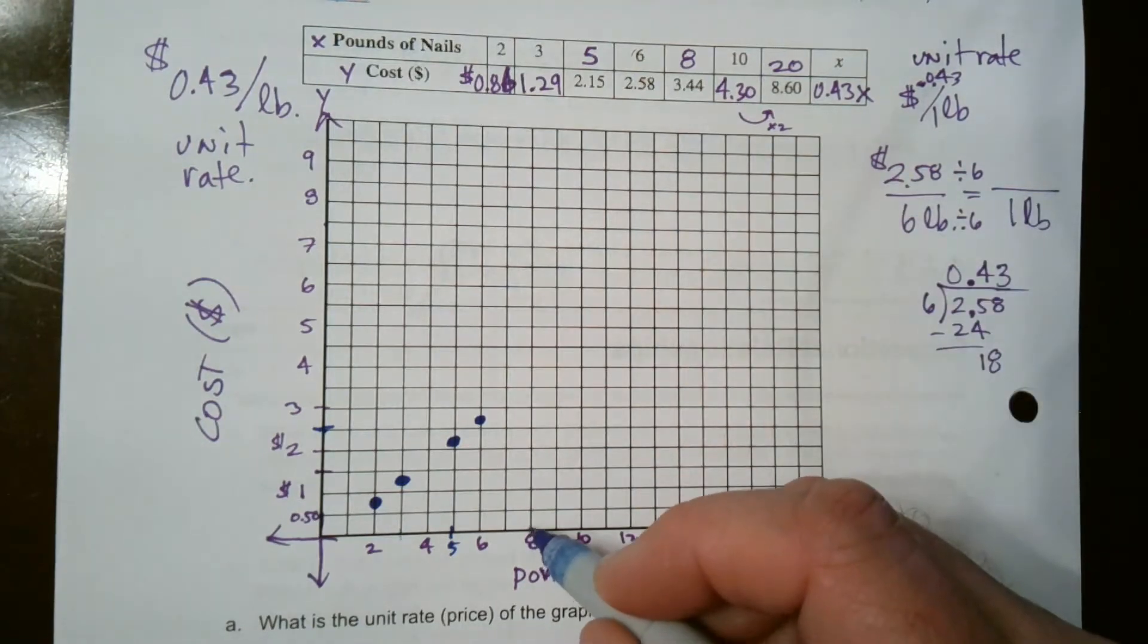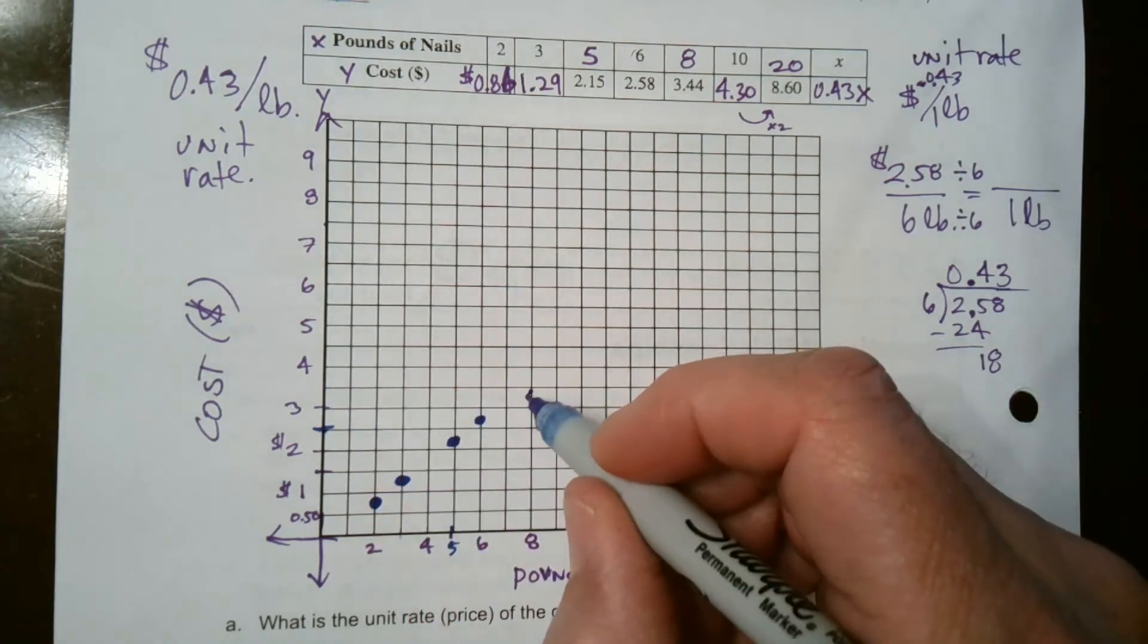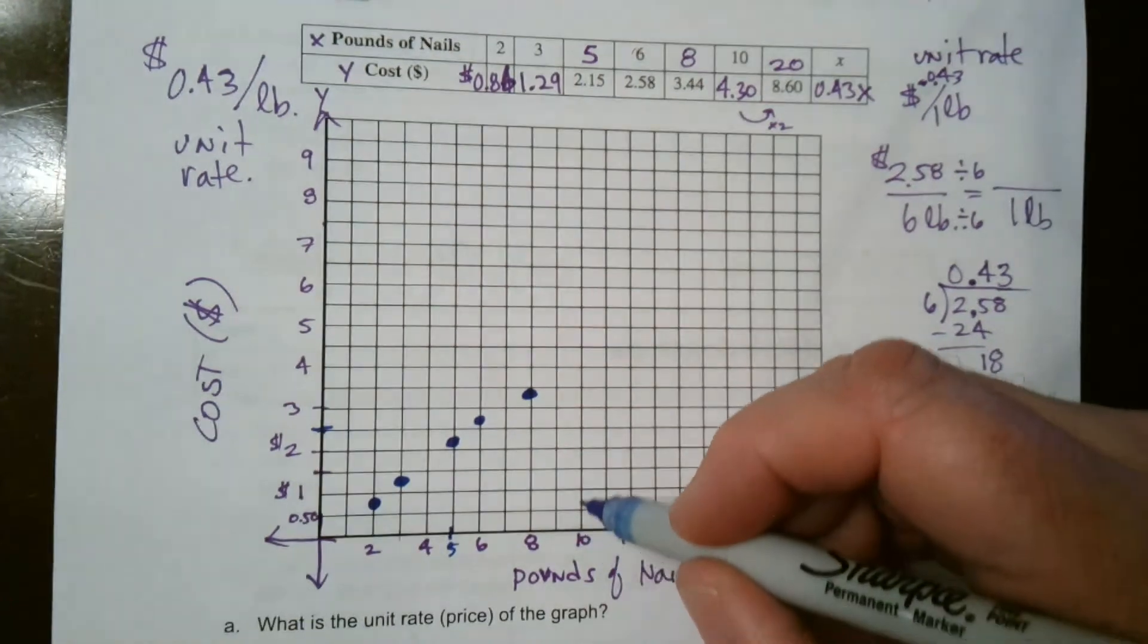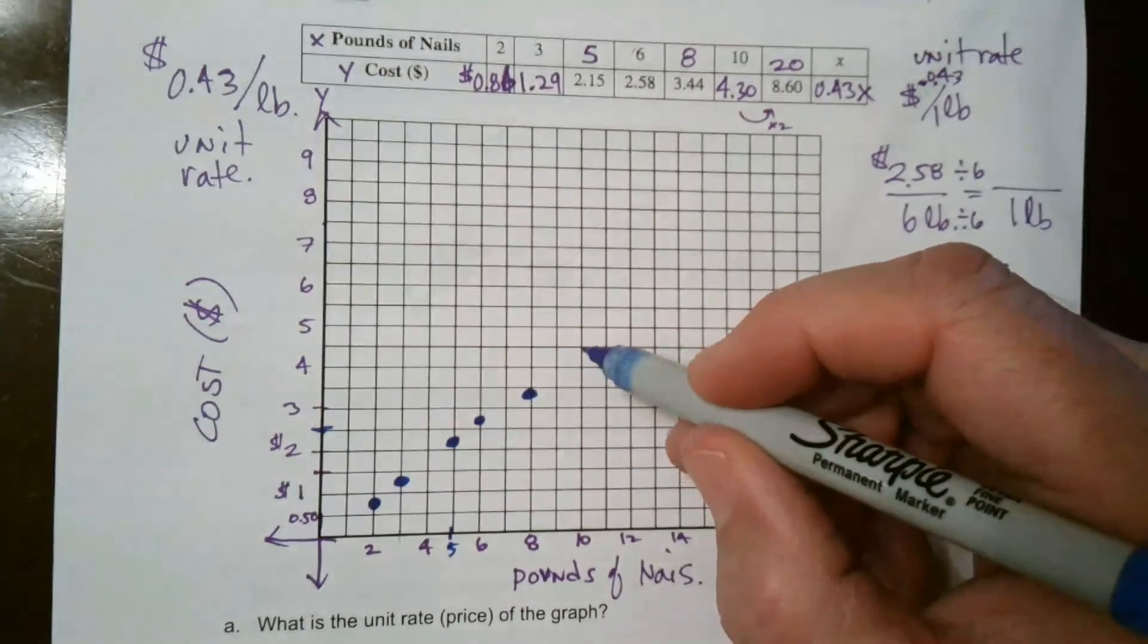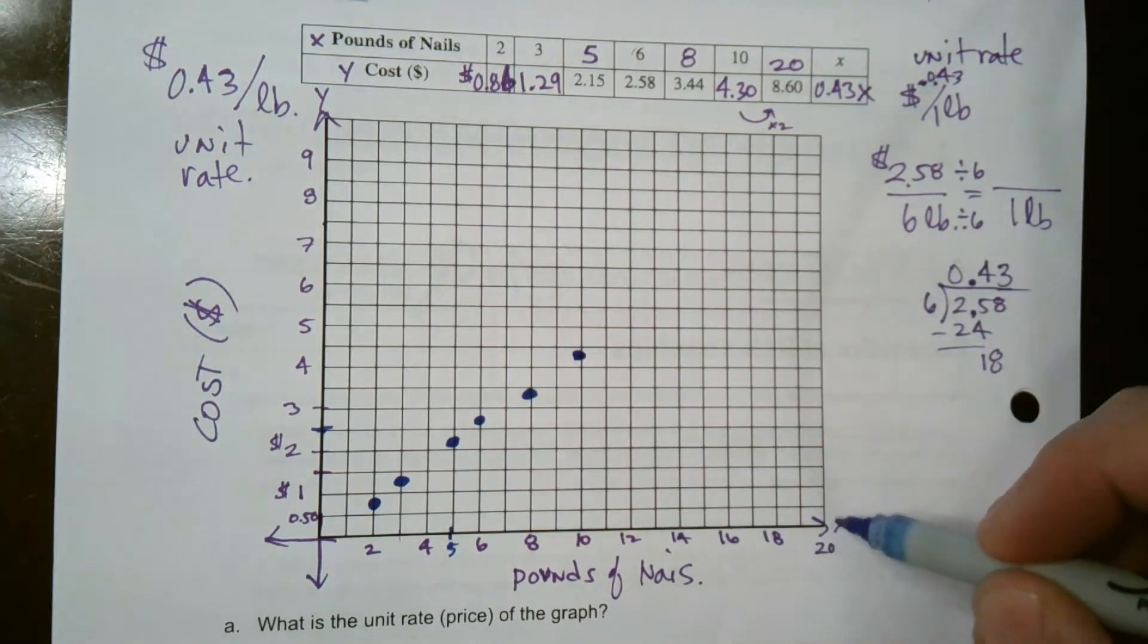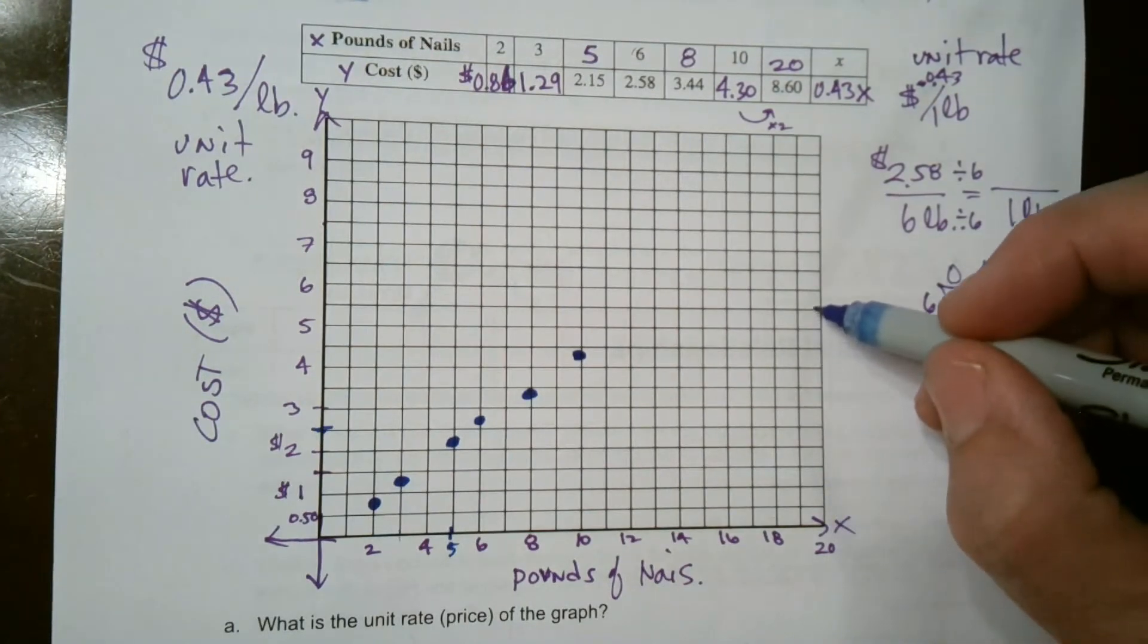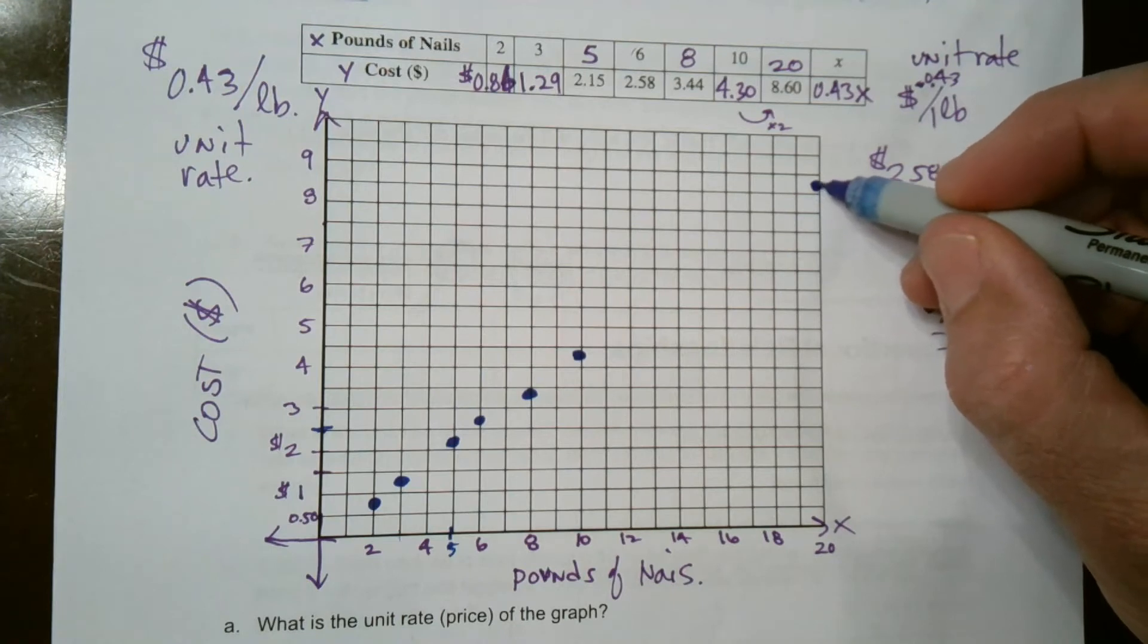I have eight. At eight, I'm at $3.44, which is below 50. This is $3.50 right there. So I'm going to put it right about there, right below 50. At 10, I'm at $4.30. $4.50 is here and 10 was right about there. So there I'm going to go below it to $4.30. My last one, 20, I have is at $8.60. There's $8, and then there's $8.50. So $8.60 would be just above.